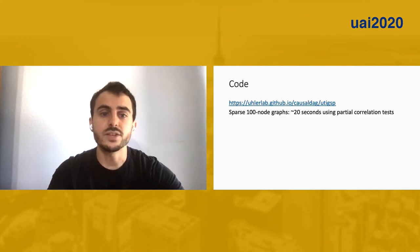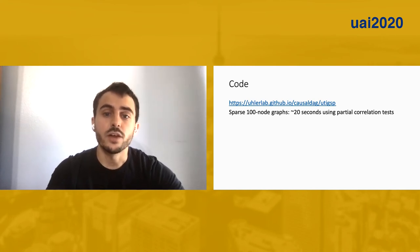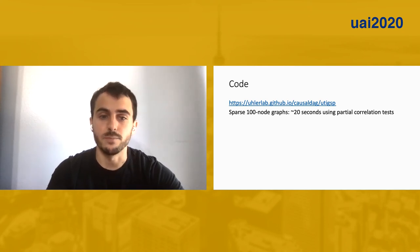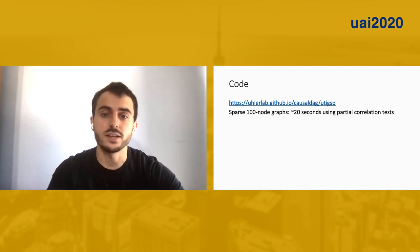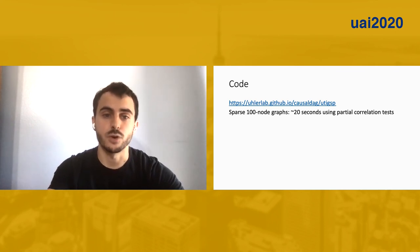If you'd like to recreate our experiments or use our implementation of UT-IGSP, you can visit the provided link to get started. The algorithm, along with other methods for causal structure learning, is implemented in an easily installable Python package called causal-deck. The algorithm runs in about 20 seconds on sparse 100-node graphs when using partial correlation tests for conditional independence, so it can be reasonably applied to moderately sized problems.